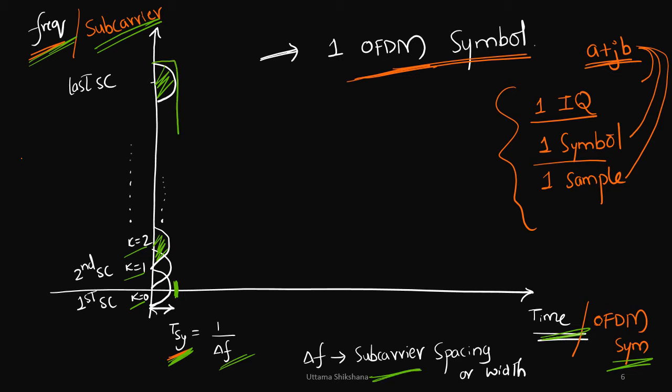Which means that this entire thing constitutes one OFDM symbol. This should not be confused with one complex quantity, which we usually call it as one IQ, or in our single carrier system we call it as one symbol or one sample. I hope this difference is very clear.